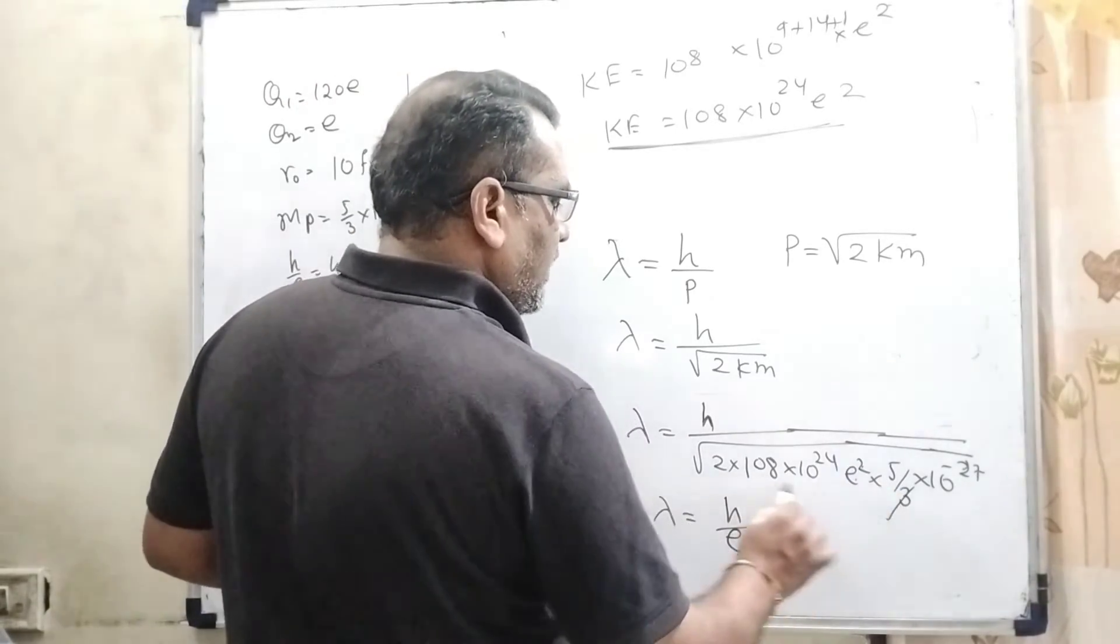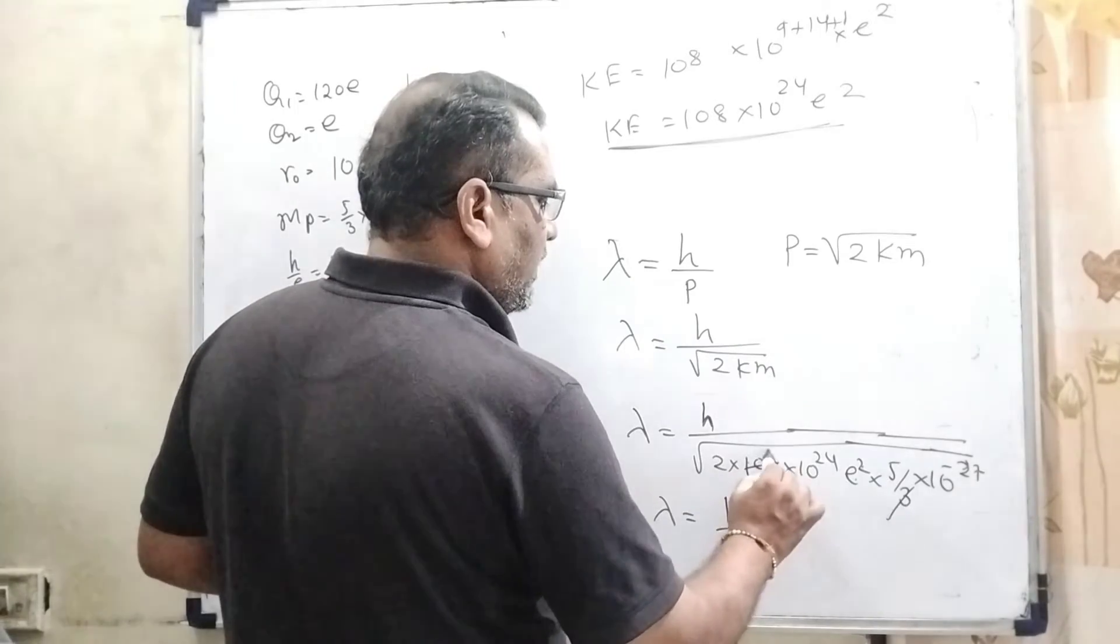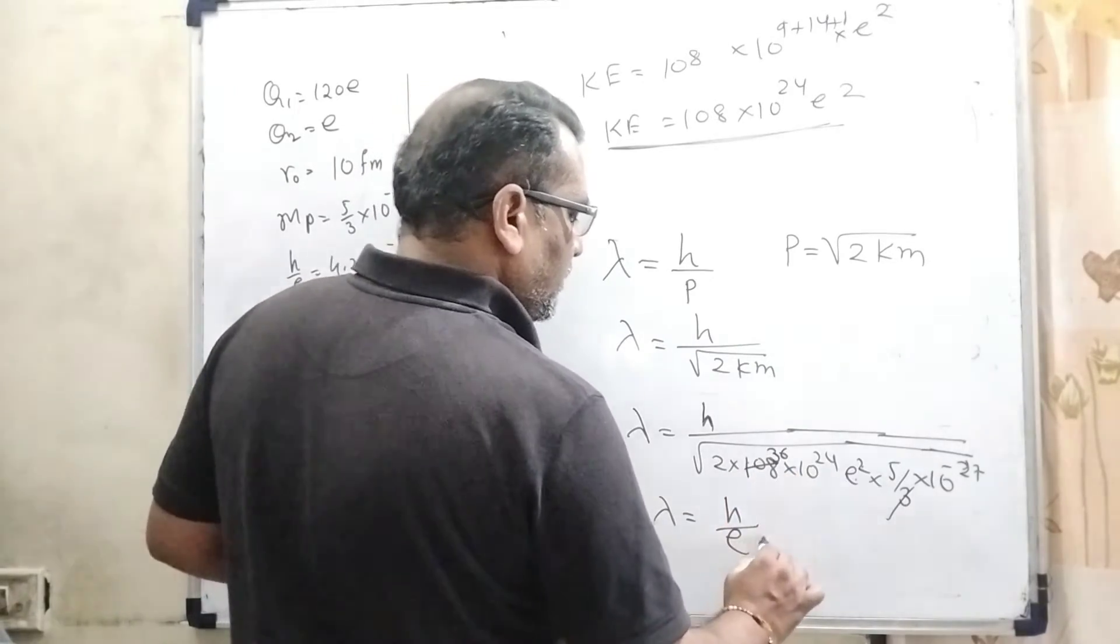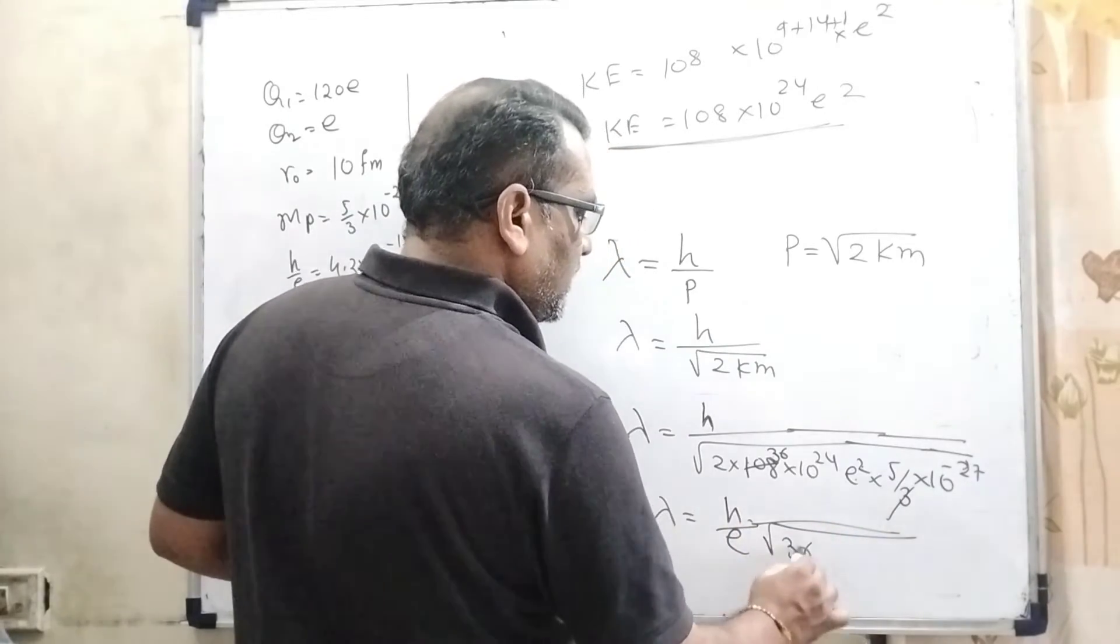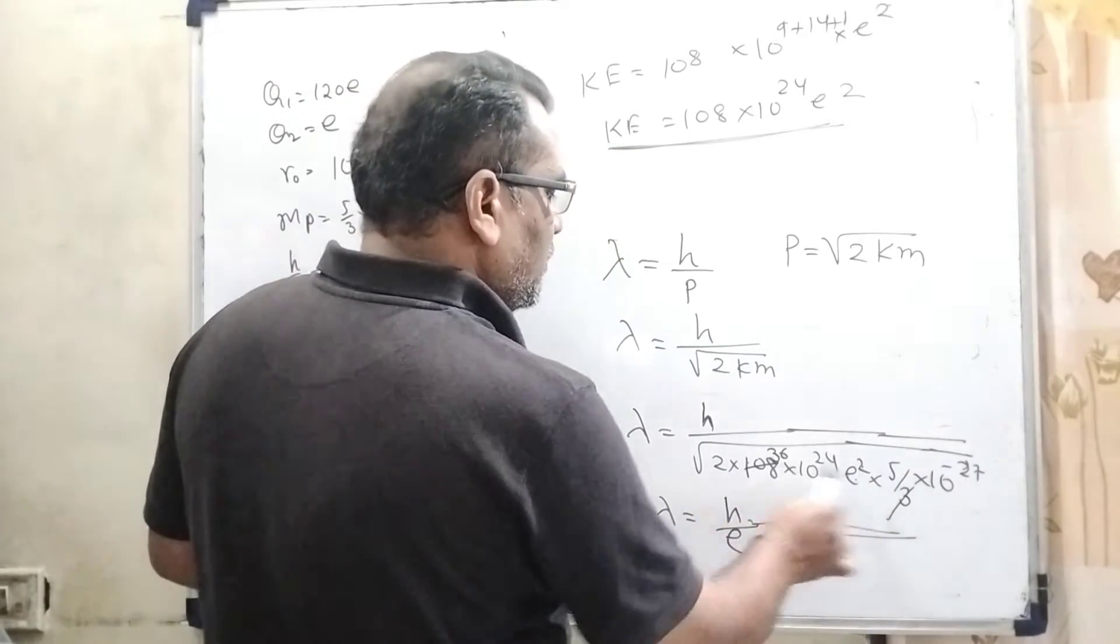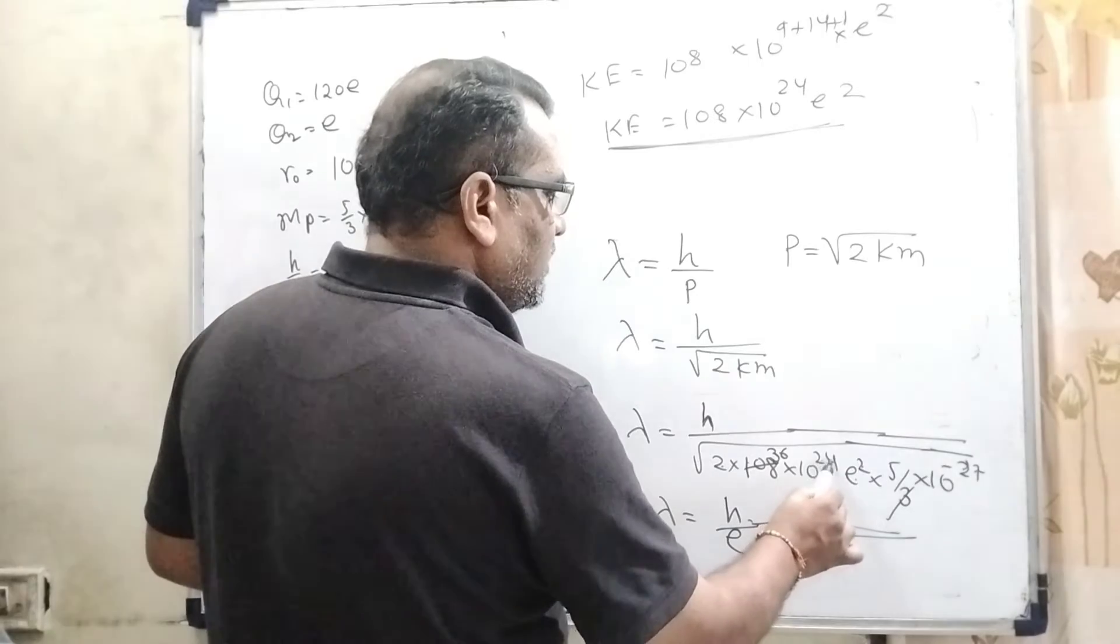You can see here √(e²) becomes e. Then 3 cancels with 108, that is 36. So here 36/2 is 18.